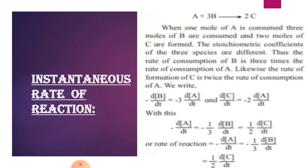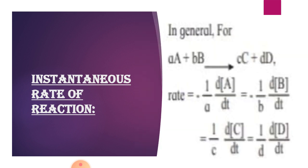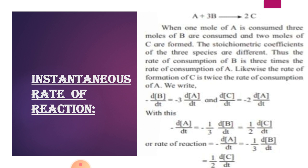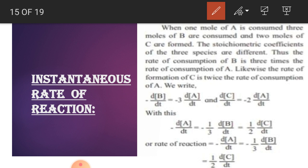The rate of consumption of B is 3 times the rate of consumption of A. A has been consumed less - 1 mol - and B has been consumed more. So B is 3 times the rate of consumption of A. Likewise, the rate of formation of C is twice the rate of consumption of A. So we write: rate of consumption, -d[B]/dt = -3 d[A]/dt, and d[C]/dt = -2 d[A]/dt.